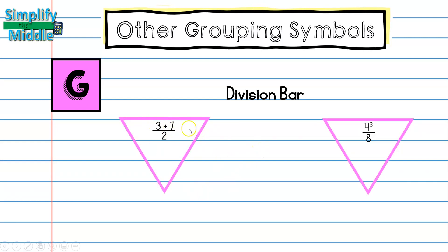This first problem I'm going to treat the top, the numerator, and the bottom, the denominator, as two separate problems. There's nothing to simplify down here, there's just 2, but on the top I have 3 plus 7, so before I can do anything with the fraction bar I have to add together the 3 and the 7. I'm going to pretend like there's parentheses around the 3 and the 7 because that's what division as a grouping symbol means. So on the top here I have 3 plus 7 which is just 10, and then I have 10 divided by 2, which is just 5.